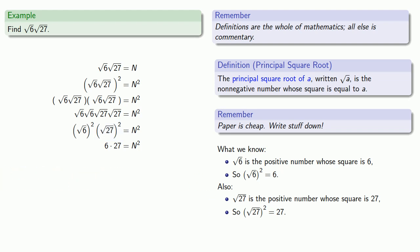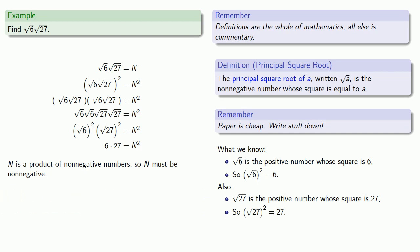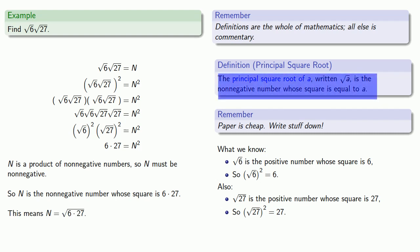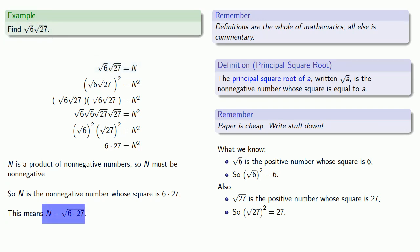Now let's think about this. Square root of 6 and square root of 27 are non-negative numbers, so n is a product of non-negative numbers, which means n must be non-negative. We see from the last line that n is the non-negative number whose square is 6 times 27. By our definition, this means n is the principal square root of 6 times 27. And since we wanted to find square root of 6 times square root of 27, and that equals n, and n equals square root of 6 times 27, we have our answer.